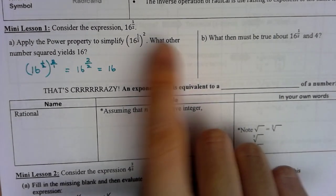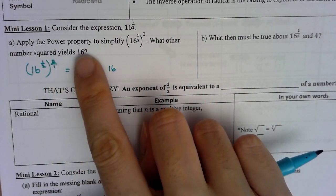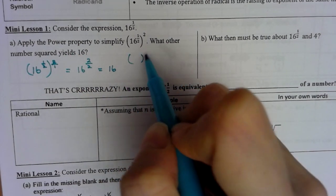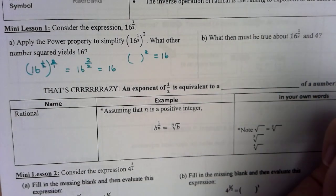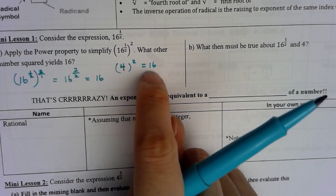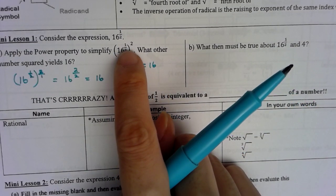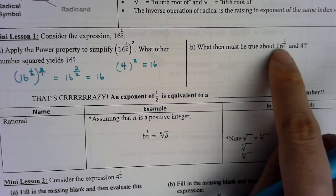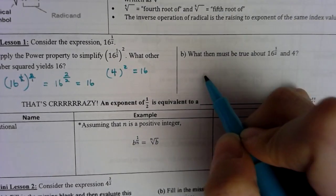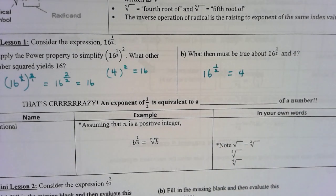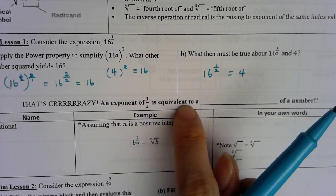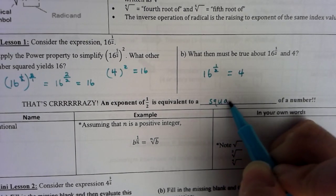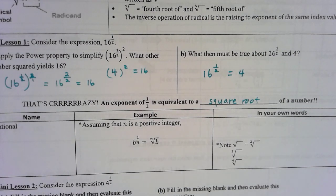Now this problem asks: what other number squared gives me 16? The answer is 4. So if 4 squared is 16, and 16 to the half power squared also gives me 16, what can we say about 16 raised to the half power and 4? They're equal. That means an exponent of one-half is actually equivalent to the square root of a number.